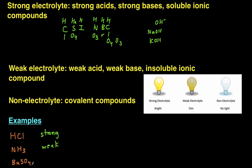Next is barium sulfate. Barium sulfate, if you remember the solubility rules, is actually an insoluble ionic compound — so this is going to be a solid. And because it's an insoluble ionic compound, it's going to be a weak electrolyte.